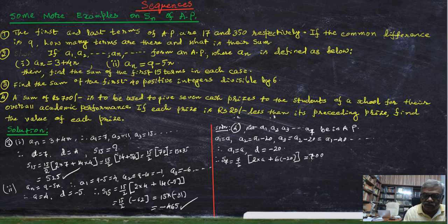Because the total amount is 700 rupees. Therefore, this is 7 by 2 into 2a minus 120 is equal to 700, and that is 14a minus 840 is equal to 1400. You can multiply both sides by 2.